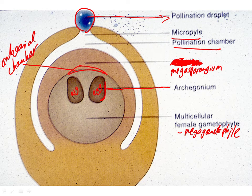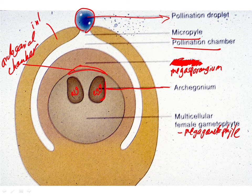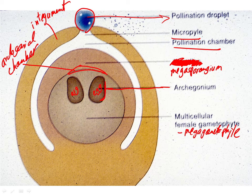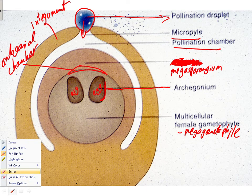The pollination droplet is a little droplet of sticky fluid, with some amino acids and nutrients in it. It's secreted by the integument and produced at the time when the pollen is transferred. Once it gets into the female cone, pollen gets stuck on that pollination droplet, and the pollination droplet is then pulled back into the ovule — with the pollen on it — drawn back into the ovule.